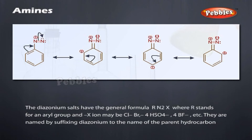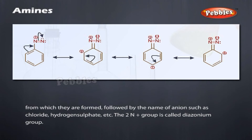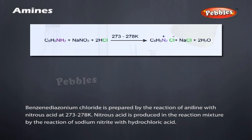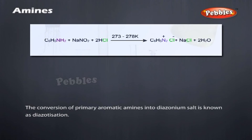Diazonium Salts: Diazonium salts have the general formula RN2⁺X⁻, where R stands for an aryl group and X⁻ ion may be Cl⁻, Br⁻, HSO4⁻, BF4⁻, etc. They are named by suffixing 'diazonium' to the name of the parent hydrocarbon, followed by the name of the anion such as chloride, hydrogen sulfate, etc. The N2⁺ group is called the diazonium group. Benzene diazonium chloride is prepared by the reaction of aniline with nitrous acid at 273 to 278 K. Nitrous acid is produced in the reaction mixture by the reaction of sodium nitrite with hydrochloric acid. The conversion of primary aromatic amines into diazonium salt is known as diazotization.